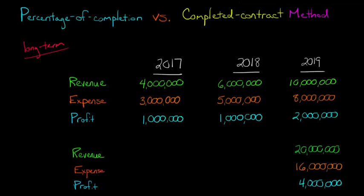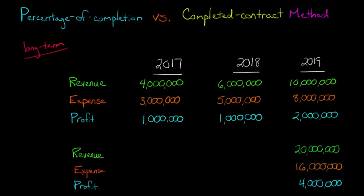So we can easily understand: we're recognizing a little bit in each period for percentage of completion, and then booking it all at the end for completed contract. And we're going to have different profit and different effects on net income in each period based on that.